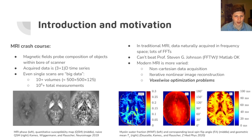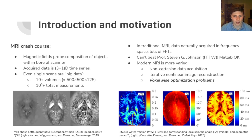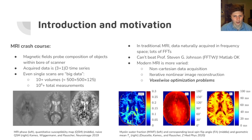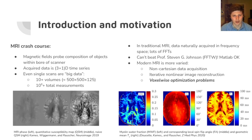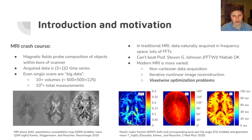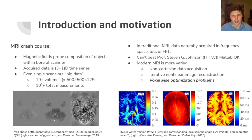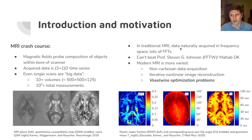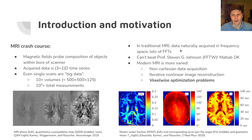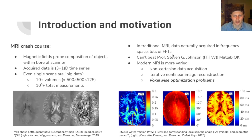By solving Maxwell's equations you can determine the susceptibility sources in the brain — it's rather difficult. On the right we see a failed attempt by a naive algorithm, and so we can already see that numerical computing is very important in MRI. There are lots of trade-offs, tricks, and optimization methods that are needed. But actually in traditional MRI, since data is naturally acquired in frequency space, you really end up depending a lot on FFTs.